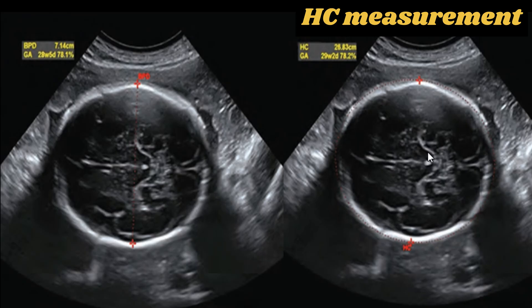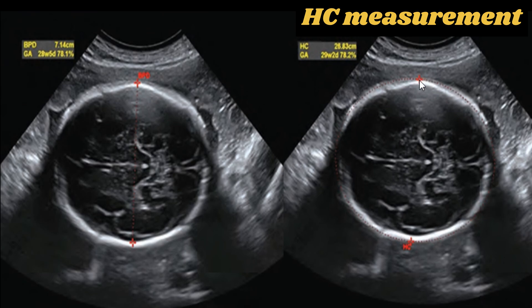Under these circumstances, head circumference may be more reliable than biparietal diameter for estimating gestational age. In this sonogram, we can see the measurement of the head circumference at the same axial level as the biparietal diameter, with calipers placed along the outer edges of the head.